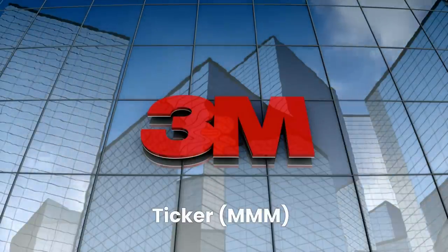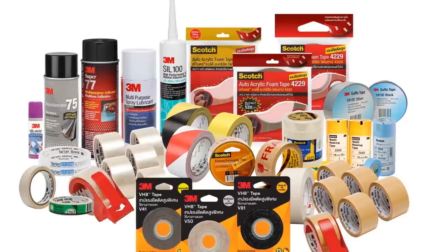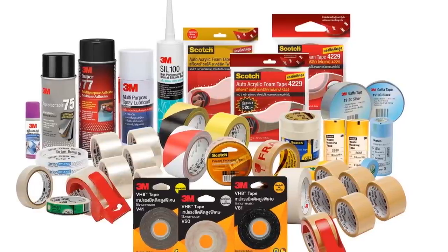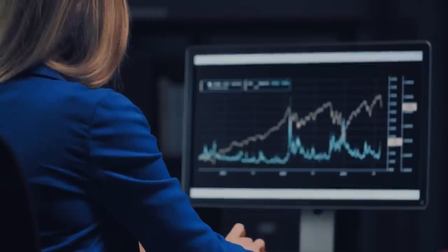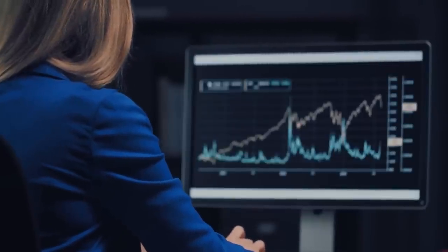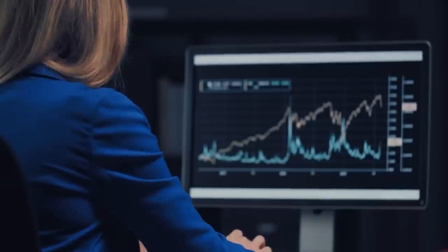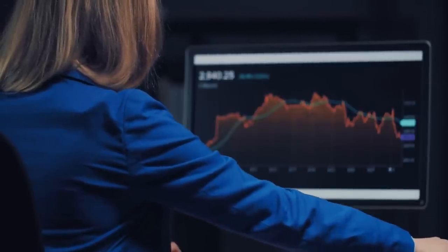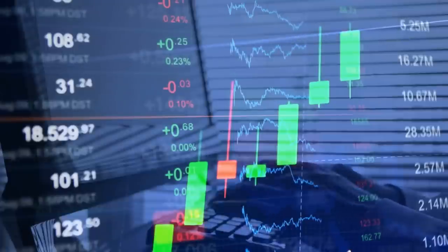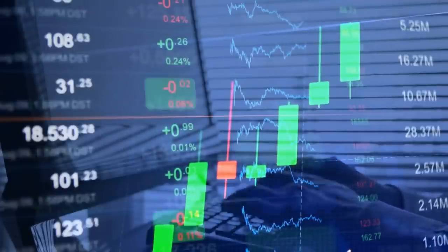Number 20. 3M Company, ticker MMM. 3M commands a brand portfolio of more than 6,000 patented products across a diverse array of industries. From consumer offerings like Post-it notes, Scotch tape and Command wall hanging strips to specialty coatings and chemicals for industrial applications, there's a wide variety of revenue streams feeding into this 70 billion dollar company. That makes for incredibly reliable operations, including more than 60 years of consecutive dividend increases.